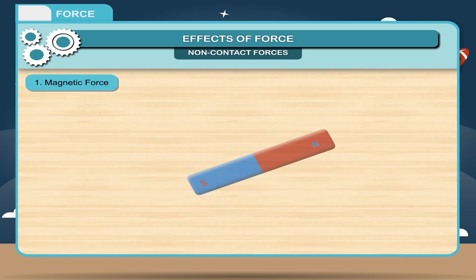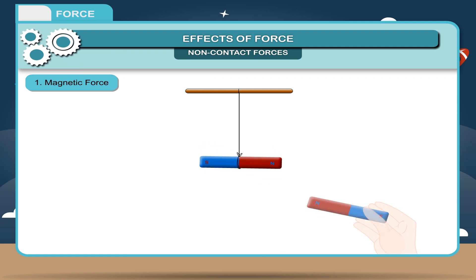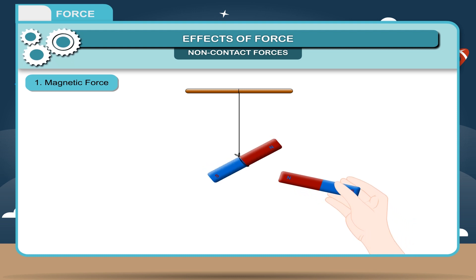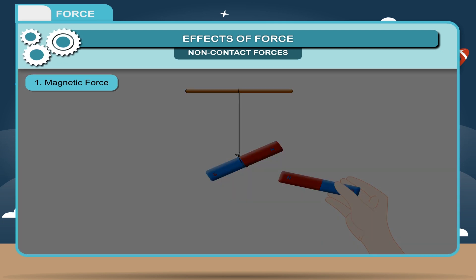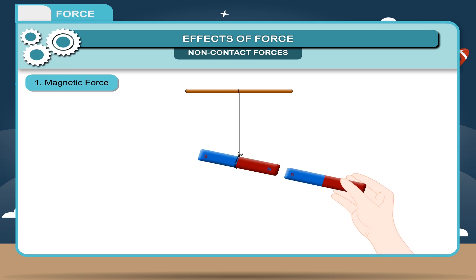Activity: Take two bar magnets. Suspend one magnet with the help of a thread — it will come to rest in the north-south direction. Hold the other magnet and bring its north pole near the north pole of the hanging magnet. You will observe that the north pole of the hanging magnet repels or moves away. Now bring the south pole near the north pole of the hanging magnet — these opposite poles attract each other, and the hanging magnet's north pole moves closer to the south pole.